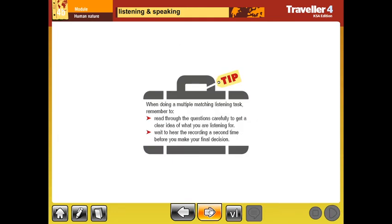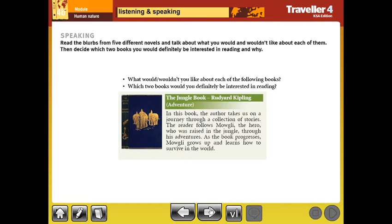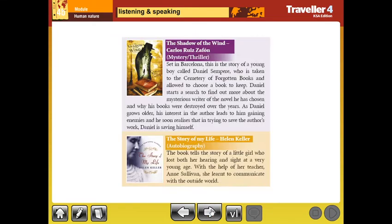Now, we will go to speaking. Here, we have something new. We have a summary, or what we call blurbs, from five different novels. You should read these blurbs. And you should give me two of them that you would like to read. And you should say why. But of course, now we don't have the chance to do this. So, read them and choose two for yourself. And try to explain to yourself why you chose them.